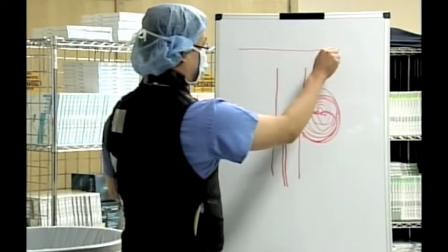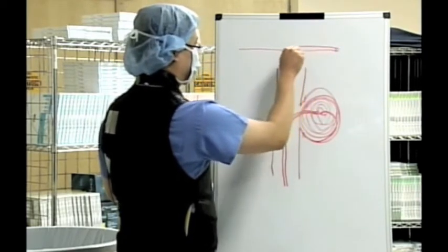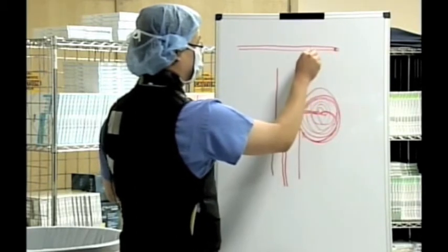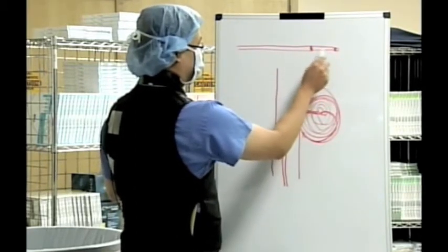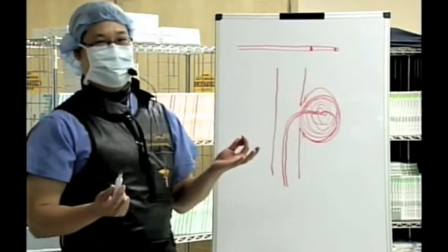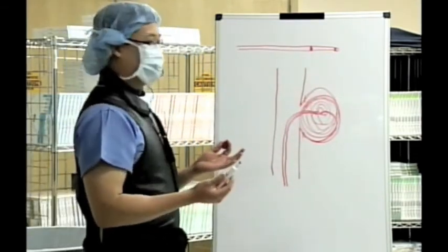The catheters, the micro catheter has a marker at the tip and a marker here. So you'll see a set of dots like that. And essentially that's all you're going to really see for the catheter. And so that's important to look at.